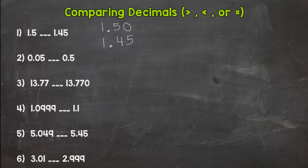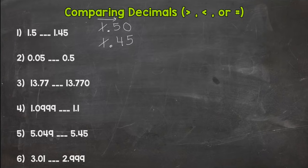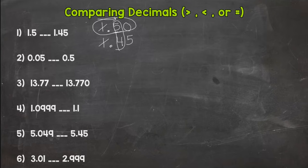So line up our decimals and put placeholder zeros in if necessary. Now we need to look left to right, comparing our greatest valued place and working our way to the right. For example, let's look at the ones place: we have a one and a one — they're the same, so we can't compare there. Let's look at the tenths place: the five is greater than the four, so this is automatically greater.